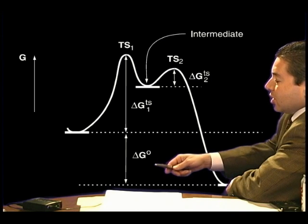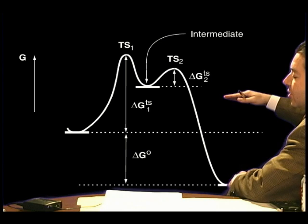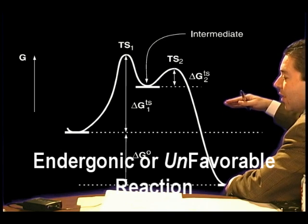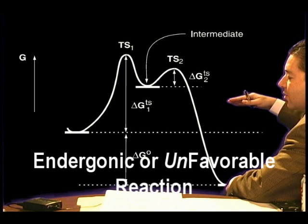If the delta G is positive, that's because the product is at a higher free energy, and that would be endergonic or unfavorable or non-spontaneous reaction.